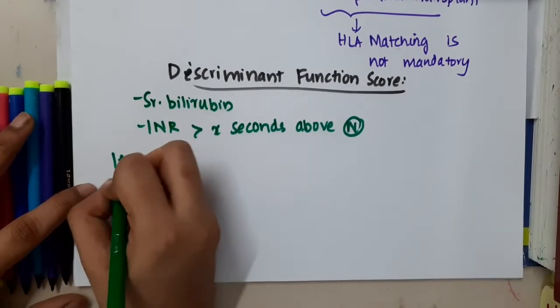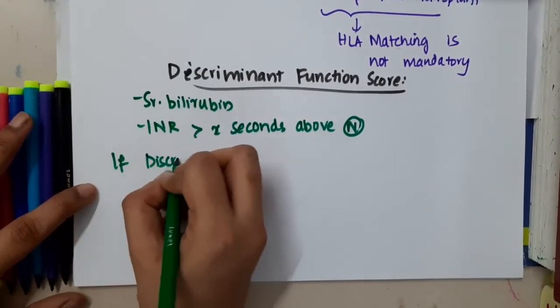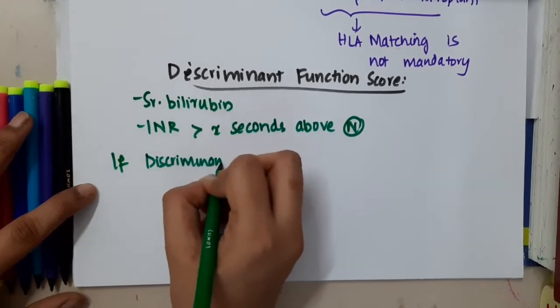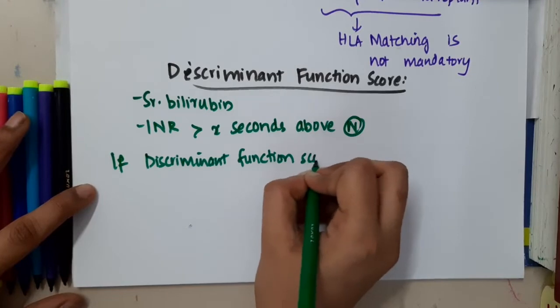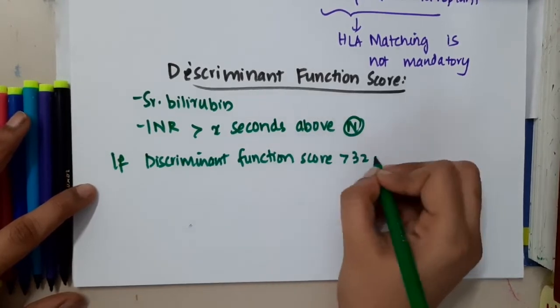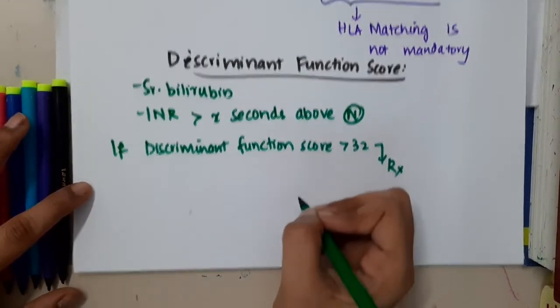If the discriminant function score is above 32, then you will have to start the patient on treatment.